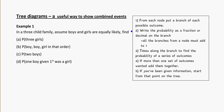Tree diagrams are a really useful way to show combined events and probability, especially for consecutive events - things that happen in order, like in time.